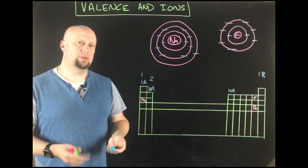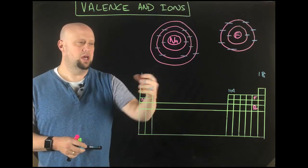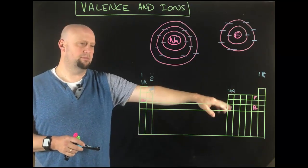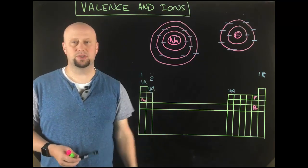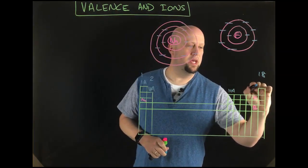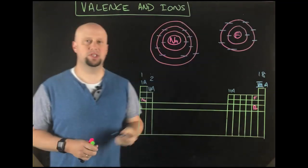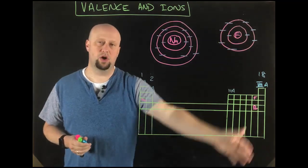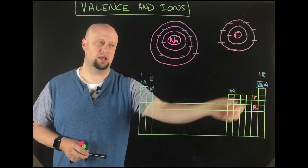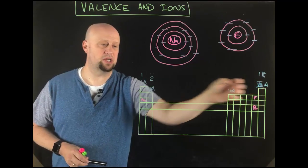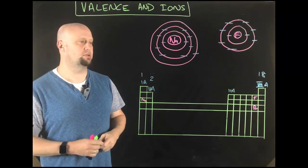The group A elements — the ones with A after their Roman numerals — the number in front tells you what the valence is. So 8A tells me that all noble gases have eight valence electrons, with the one obvious exception of helium. Helium goes over with the noble gases because it behaves like one, but electron-configuration-wise it ends in S. There are some exceptions in chemistry, but that's generally how it works.